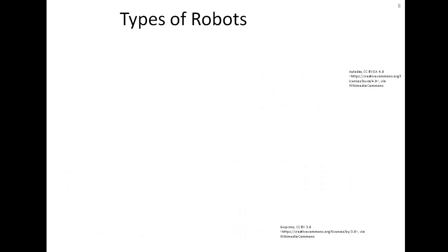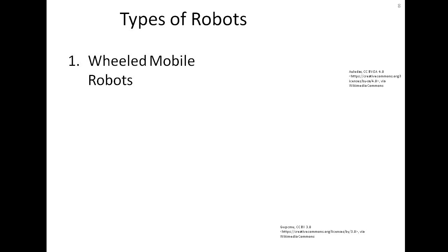Now the types of robots. Generally, robots are categorized as mobile robots, industrial manipulators, and other types such as bio-inspired robots, humanoid robots, and soft robots.